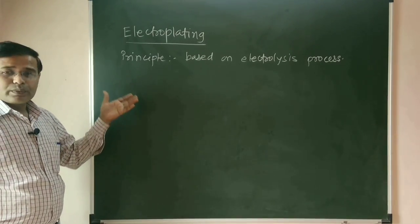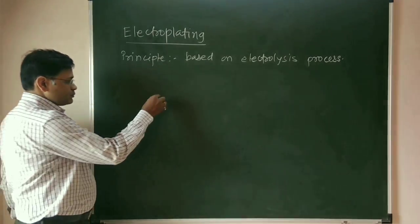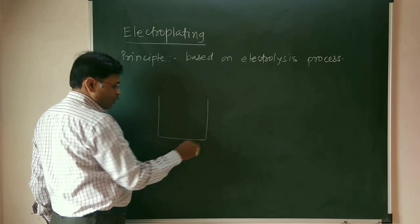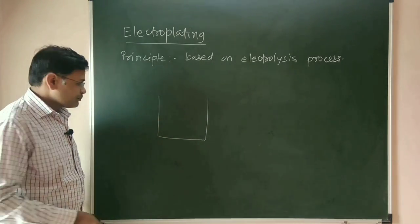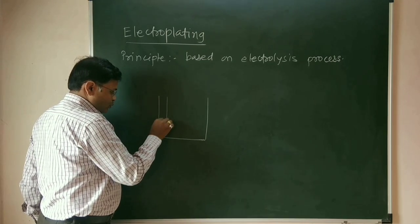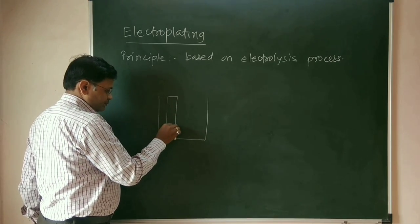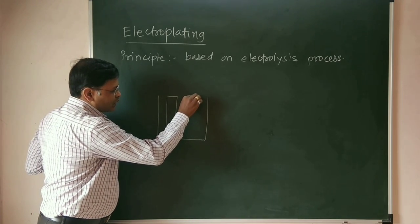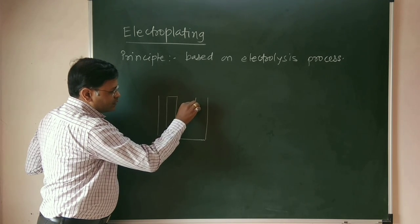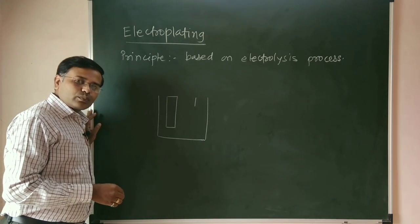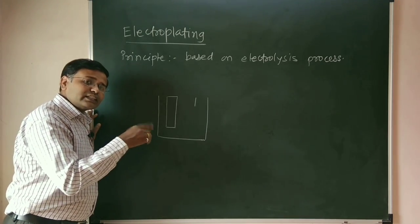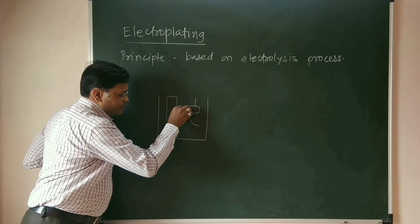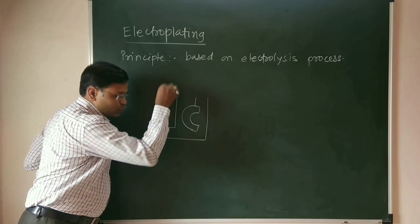We'll see the diagram. We have to take a non-conducting jar. In that, suppose we are taking one anode, and we have to take a metal for electroplating. The benefit of this method is that any shape of metal can be taken for the coating process — that is, the electroplating process.